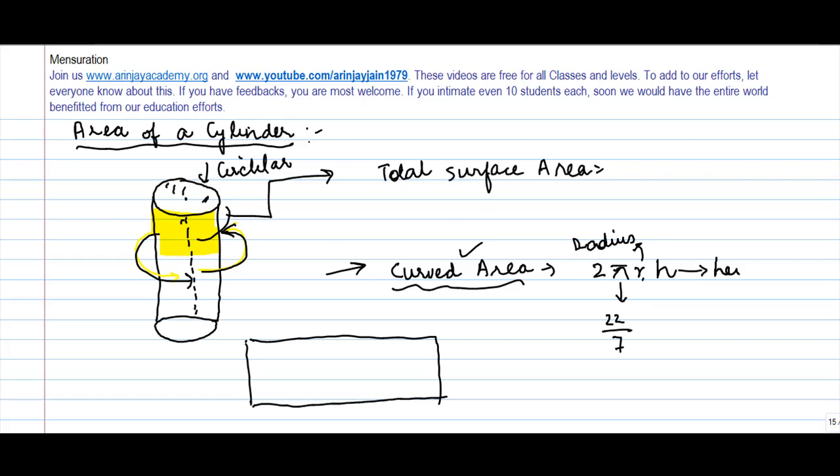So when you take the area of this particular portion, which if you would have covered this cylinder with, the area of this portion which is the curved area comes to 2πrh.